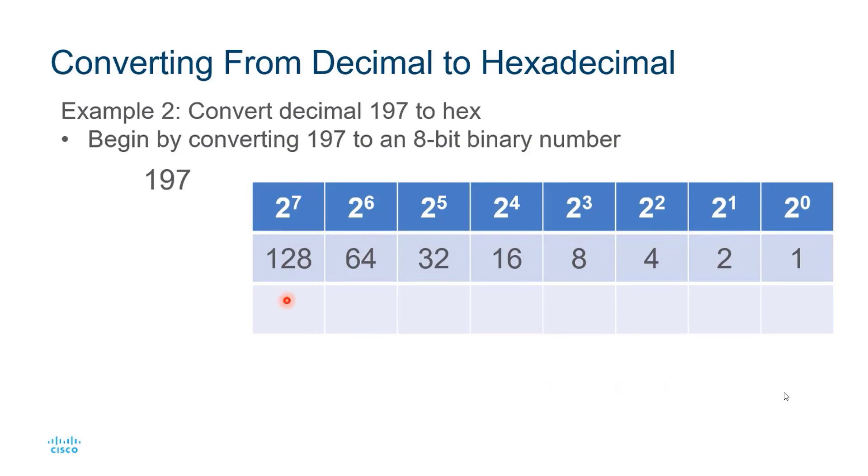I'll begin by writing 197 on the left side. And starting at the left, if the place value is equal to or less than this number, I'll put a 1 under it and subtract it. And if it's greater, I'll put a 0 under it and move to the next place value. Since I can subtract 128 from 197, I'll put a 1 under it and subtract it. And that gives me 69. I can subtract 64 from 69, so I'll place a 1 under that and subtract it. That gives me 5.